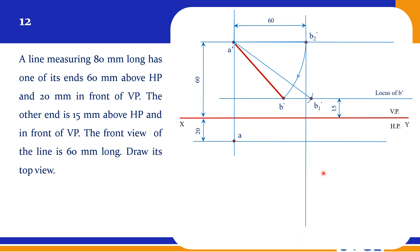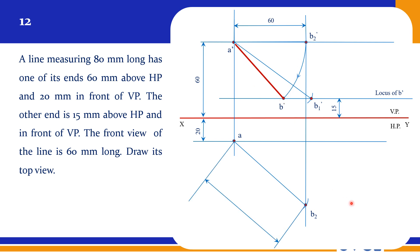If we have B2, then it is the locus of B. If we get B2, locus of B can also be easily obtained. Locus of B can be obtained very easily here since we know the distance. The true length is already known — that is 80mm — so cut the arc. In the earlier case we did it from the top view, but here we are doing it from the front view. So this is B2, the thin line. If we project B2 dash, we rotate it and get A dash B dash. This is the true length line, and this is the locus of B.